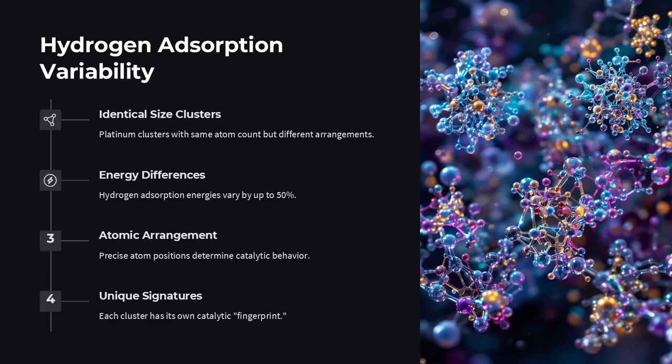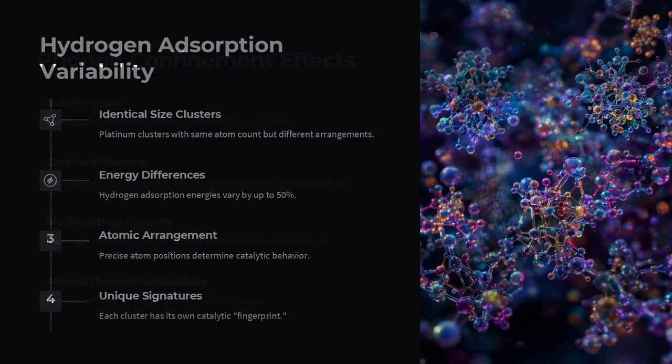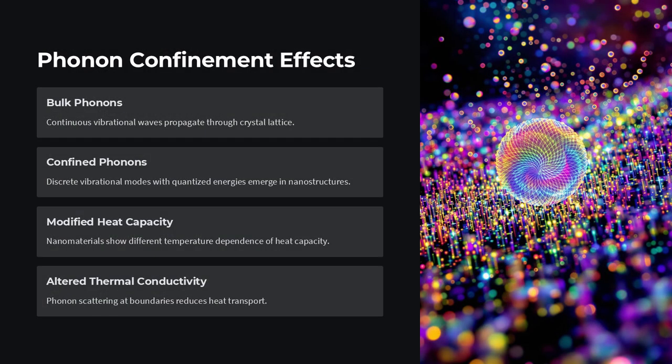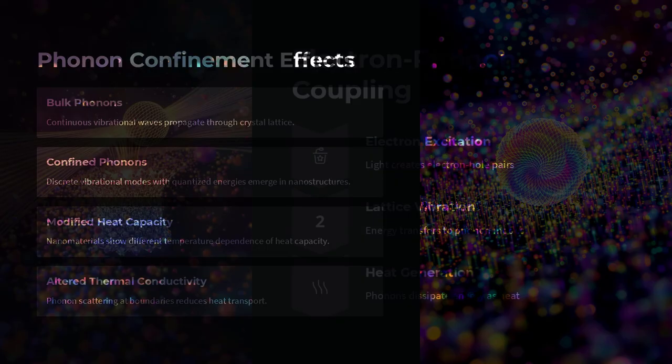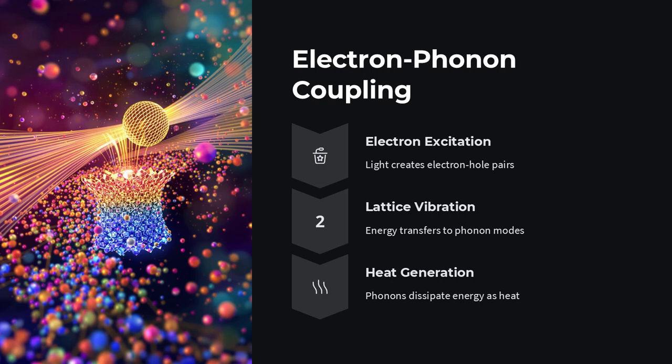Electron scattering at surfaces and grain boundaries dominates resistivity, while electron-hole recombination dynamics in semiconductor nanostructures define photoluminescence lifetimes. These microscopic phenomena require a multi-scale approach merging atomistic simulations with quantum electrodynamics to predict behaviors that classical continuum equations simply cannot capture.